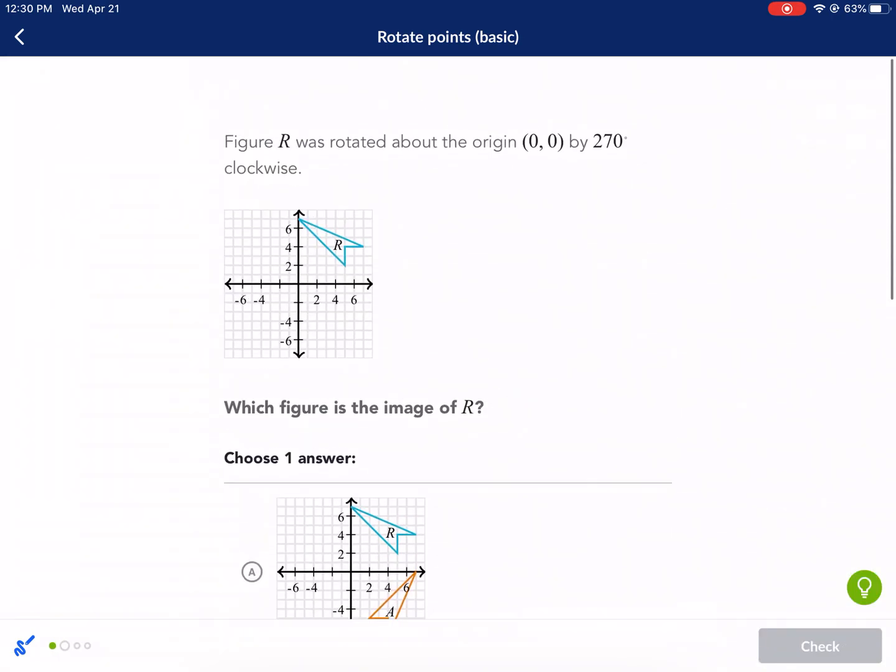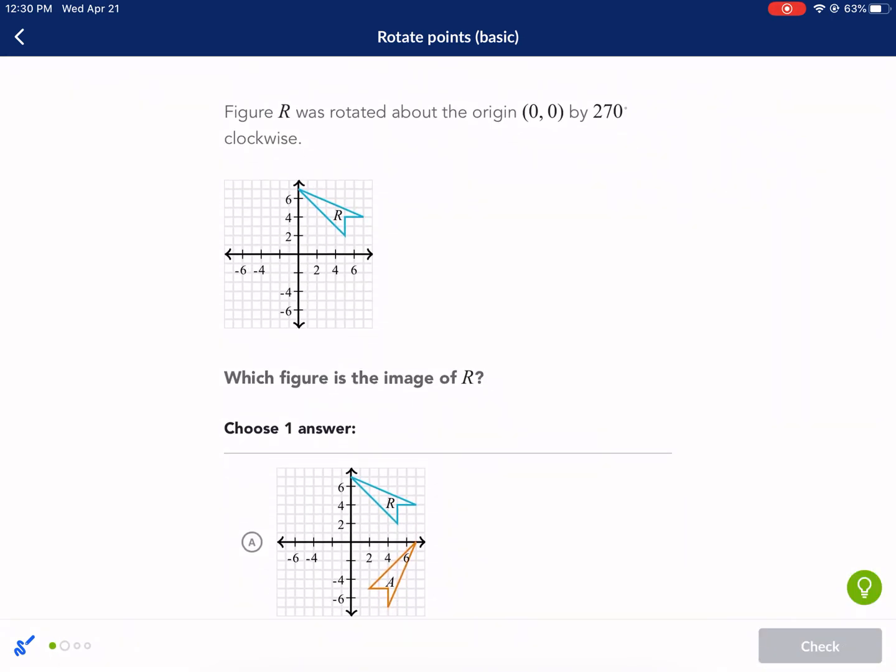Next question. Figure R, that little arrow, was rotated about the origin, 0, 0. That's the origin, by 270 degrees clockwise.